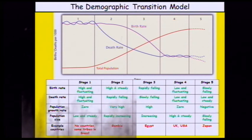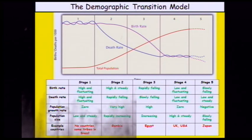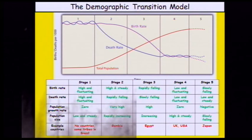The death rate starts high and fluctuating in stage one, decreases rapidly in stage two, is slowly falling in stage three, and in stage four it is low and fluctuating. In stage five it's low and steady with a small increase at the very end. For total population: very low and steady in stage one; rapidly increasing in stages two and three; still increasing but a little less in stage four and quite high; and in stage five the total population is high and starting to slowly fall away.